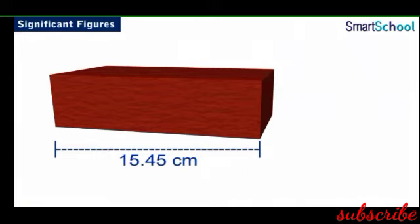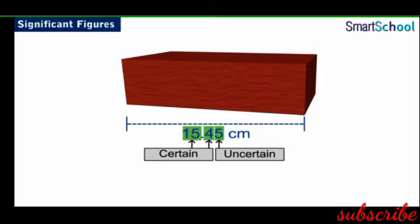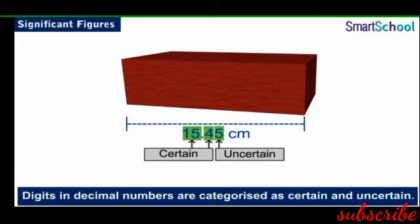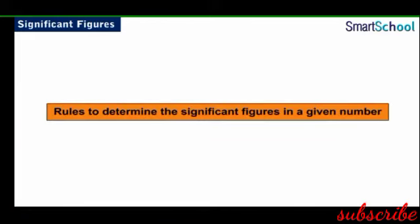In this measurement, 1 and 5 in the whole part and 4 in the decimal part are certain, while the 5 in the decimal part is uncertain. This 5 is uncertain because it is an approximate value. Digits in decimal numbers can be categorized as certain and uncertain. The number of digits in a measurement which are certain, plus one additional digit which is uncertain, are together known as significant figures.